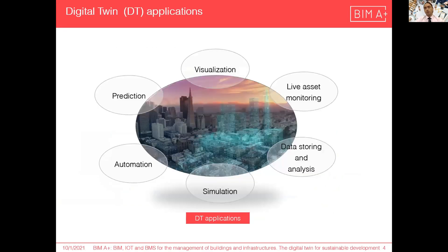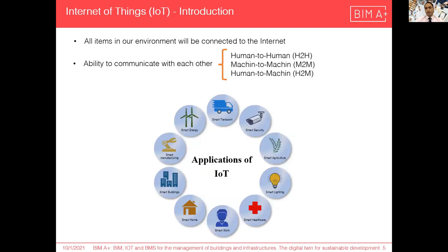It can be used for visualization, live asset monitoring, data storing and analysis, simulation, automation and prediction in different industries. IoT is one of the main pillars and the aim is to connect all devices to the internet. This connection can be human to human, machine to machine, and human to machine, and can be used in different industries such as transportation, building, agriculture, health, and so on.